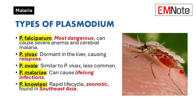Plasmodium falciparum is the most dangerous species, responsible for the majority of severe malaria cases globally. It can rapidly multiply in the bloodstream, leading to severe anemia and complications such as cerebral malaria, which can result in death if not treated promptly. This species is prevalent in tropical and subtropical regions, particularly sub-Saharan Africa.